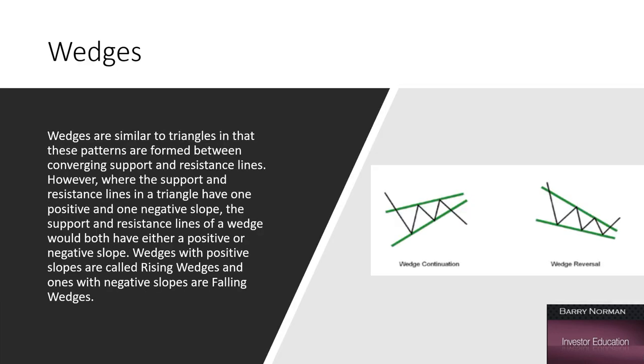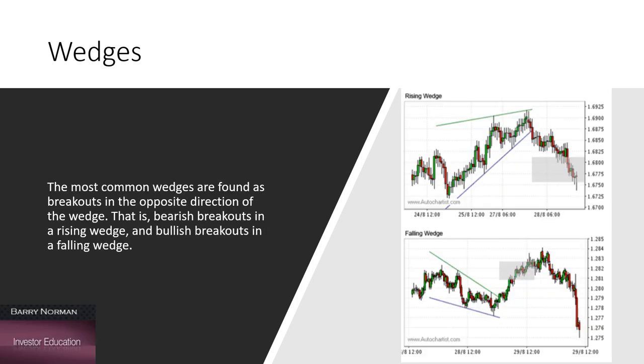And then we have wedges. We have a continuation wedge and a reversal wedge. But a wedge looks just like a triangle, except they have different angles on their slopes. So, I apply the same thing that I would apply to my triangle. And as price gets forced closer and closer to the apex, it gets narrower and narrower. We wait for the breakout of that price pattern.